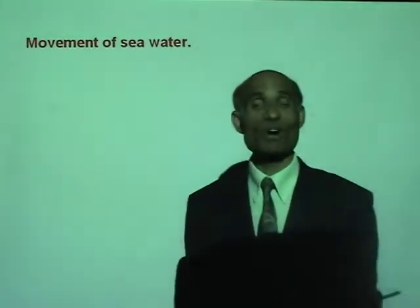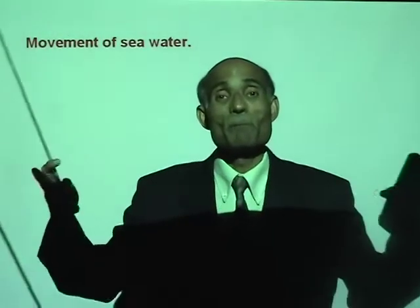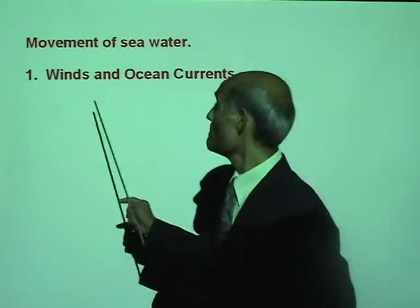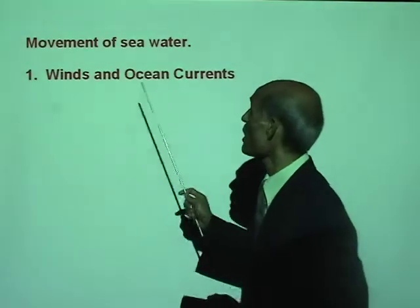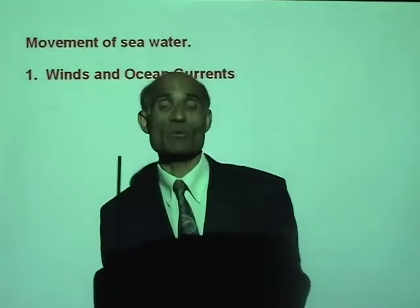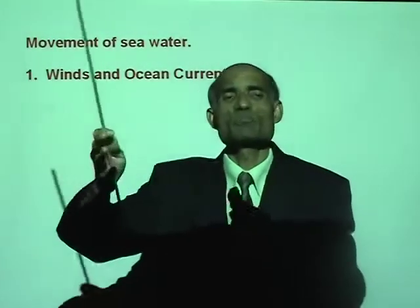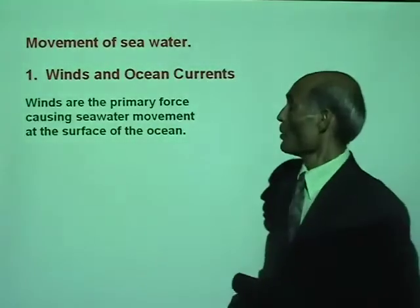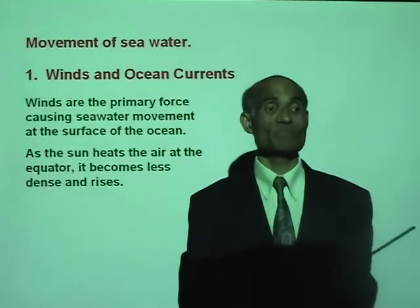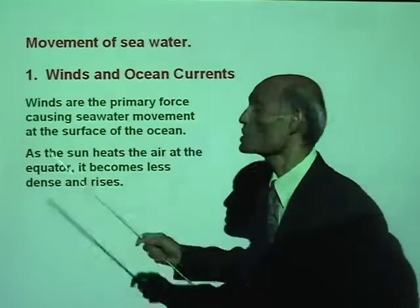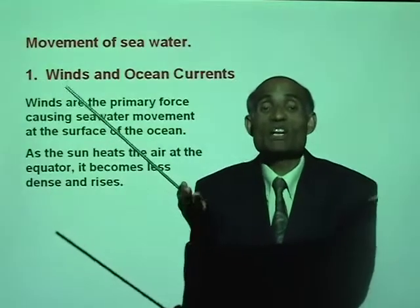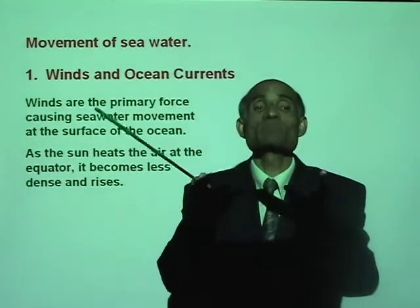Let's talk about the movement of seawater. One of the major reasons for the movement of sea and ocean currents are winds. Winds are the primary force causing seawater movement at the surface of the ocean. As the sun heats up the air at the equator, the air becomes less dense, rises, and spreads to the north and south.